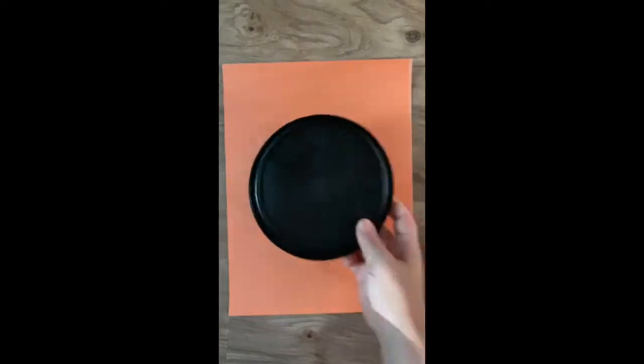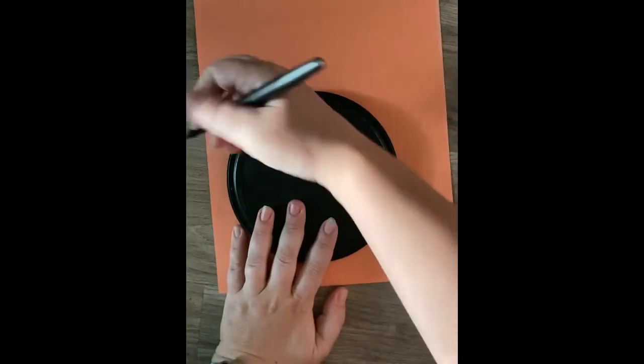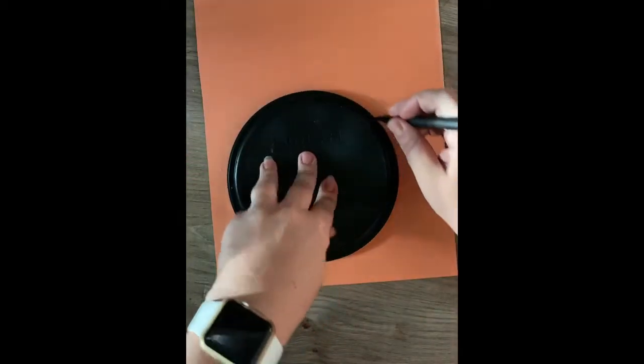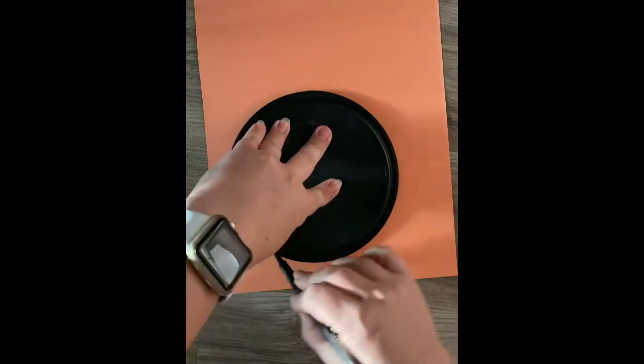I'm going to start with a piece of orange paper to make the crust for my pizza. I trace my circle and then I'm going to cut it out.